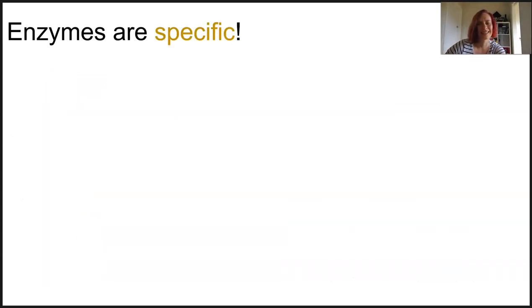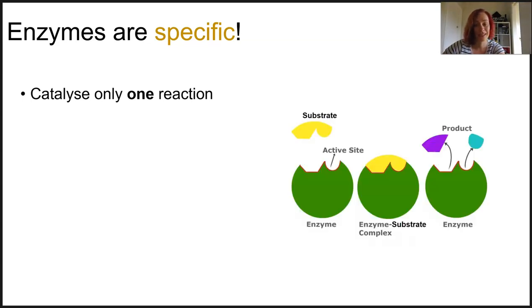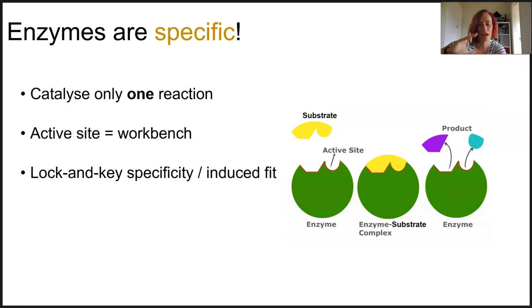Enzymes can only assist with one specific job. They are the epitome of that phrase, you had one job. Apart from a very few rare exceptions, they do not multitask. The substrate in the chemical reaction will bind to a specific region on the protein known as an active site, and essentially that's a workbench. The shape and the chemical structure of the active site will match perfectly, like a lock and key.